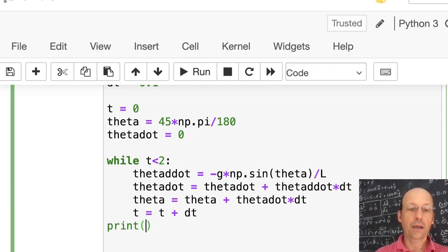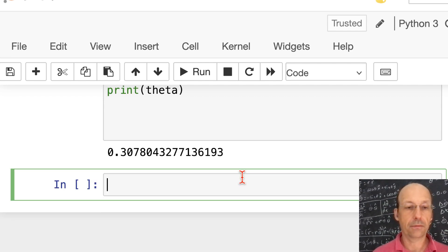So while. This is exactly what we did before. While. Let's do it for two seconds. t less than 2. First thing I'm going to do is to calculate theta double dot. Theta ddot. You can call it whatever you want. Theta ddot is equal to negative g times sine of theta. But sine is not in Python. So I need to say np.sine of theta divided by L.